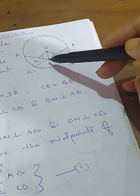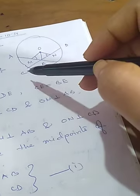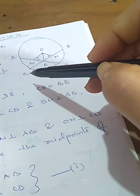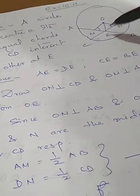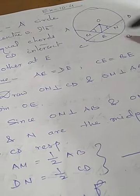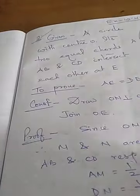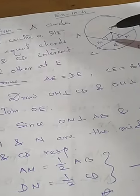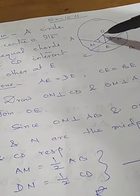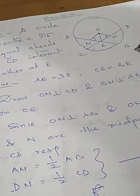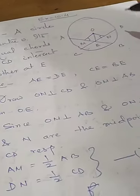After intersecting at E, you get two parts of chord AB: AE and BE. For chord CD you get two parts: CE and ED. We are going to prove that the corresponding segments are equal, that means AE = DE and CE = BE. For construction, we draw OM perpendicular to AB and ON perpendicular to CD, and we also join OE.